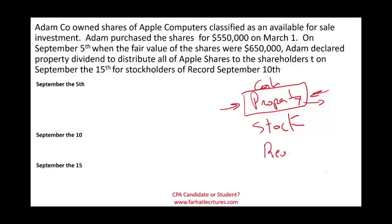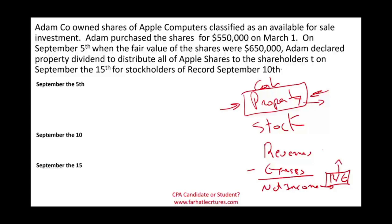The company generates revenues from operating the business, incurs expenses, and the difference between those two is net income or profit. This profit sits in retained earnings — basically the profit that we keep. At some point the company wants to distribute this profit to shareholders as dividend. Property dividend also comes out of retained earnings, so if you don't have retained earnings you don't have a dividend — you have to have some sort of profit.